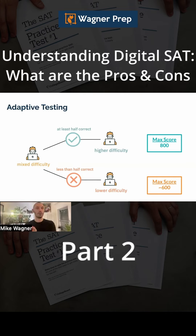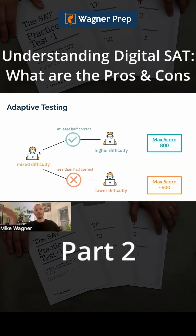There are only two buckets that you end up in. Generally it's about half — a little more than half. If you get about half correct in the first module, you'll move into the higher difficulty module. If you get half or less correct, then you move into the lower difficulty module.